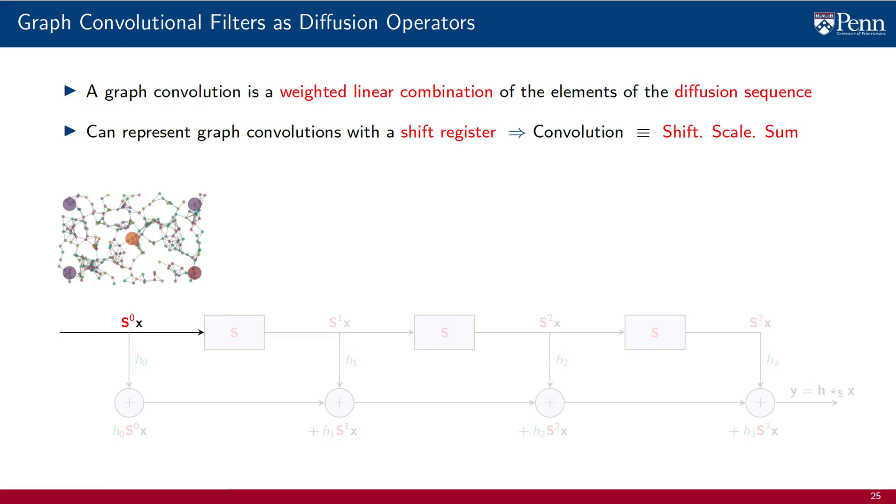Let's start with the signal x, which we write as S to the power of 0 times x. This is the shifting. We scale by h_0 and we sum towards the output. We now multiply this signal by the shift operator S. This is the shifting. It produces the signal S to the power of 1 times x, element 1 of the diffusion sequence. We scale by h_1 and we sum towards the output.